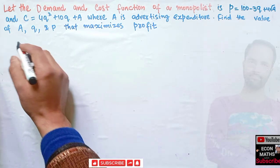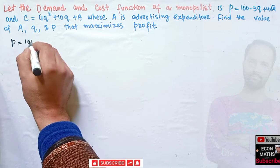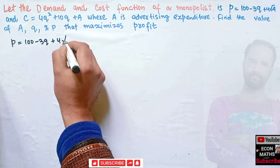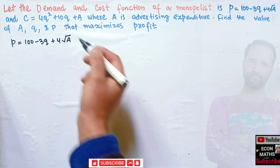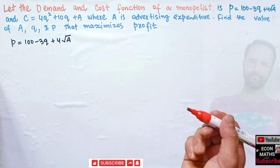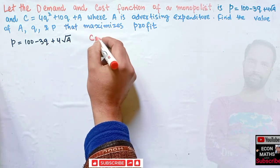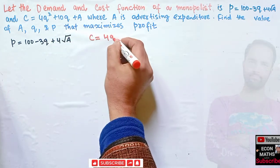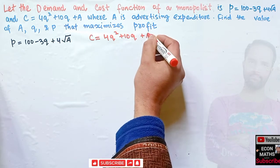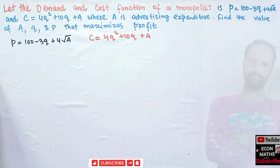We are given the inverse demand function P = 100 − 3Q + 4√A, where A denotes the advertising expenditure. Also, the cost function is given as C = 4Q² + 10Q + A. This is the inverse demand function and this is the cost function for the monopolist.